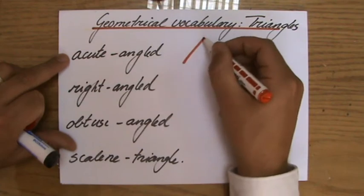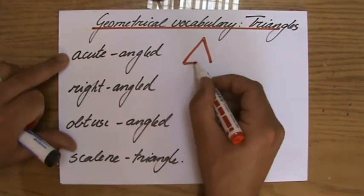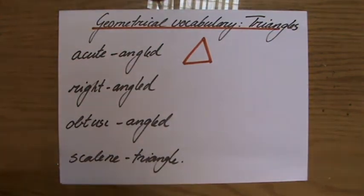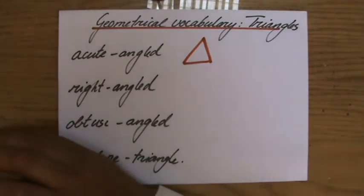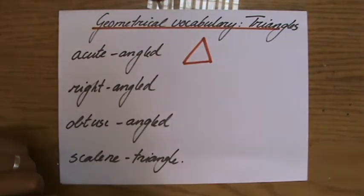For instance, this one, it's a triangle where all three angles are less than 90 degrees. So all three angles are less than 90 degrees.